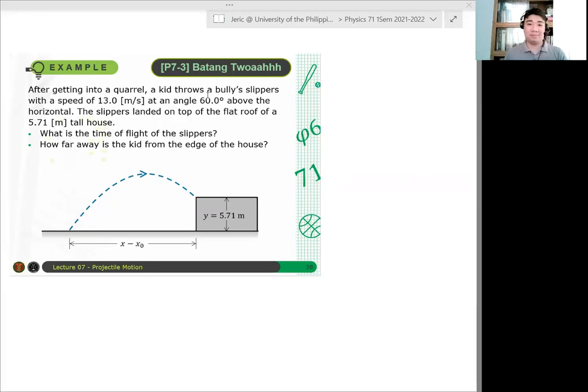Okay, let's solve another problem. So this is problem 7-3, Batang Kuo. After getting into a quarrel, a kid throws a bully slippers with speed 13.0 meters per second at an angle 60 degrees above the horizontal. The slippers landed on top of the flat roof of a 5.71 meter tall house. What is the time of flight of the slippers and how far away is the kid from the edge of the house?